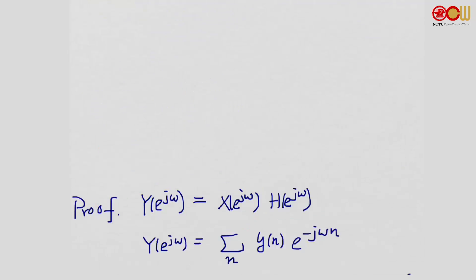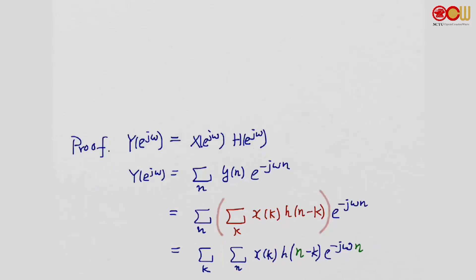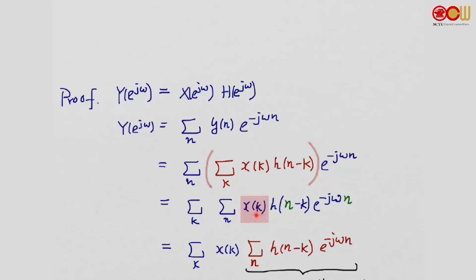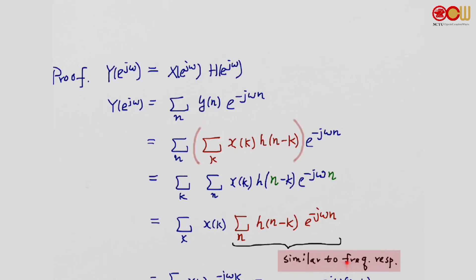The proof is very similar to the continuous-time case. By definition, we have Y(e^jω) written as a summation. We plug in the relation that y[n] is the convolution of x and h, giving us a double summation. When we have two summations — one over n and one over k — it's usually a good idea to switch the order. So we sum over k first, then over n. We can see that x[k] does not depend on n, so we can pull it out. The remaining term h[n−k]·e^{−jωn} looks a little similar to the frequency response.